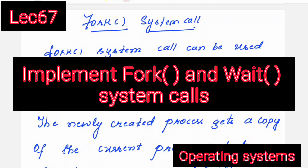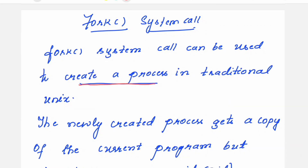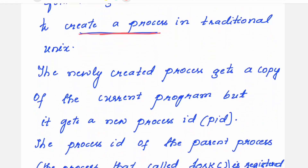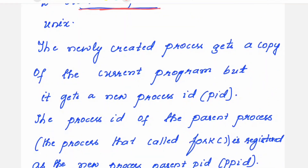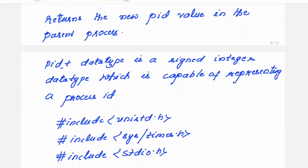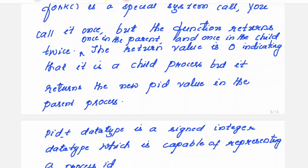Hello viewers, welcome to this video lecture series on operating systems. This particular topic is in continuation with the system calls. Fork is the system call which is used under the process category. This can be used to create a process in traditional Unix, and this newly created process gets a copy of the current program but gets a new process PID. Let me explain the concept first and then I will give you the demo program also.